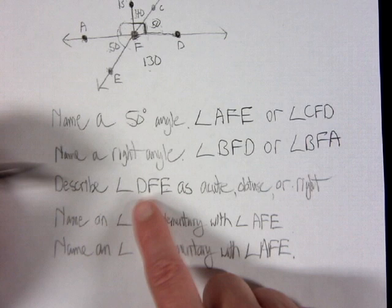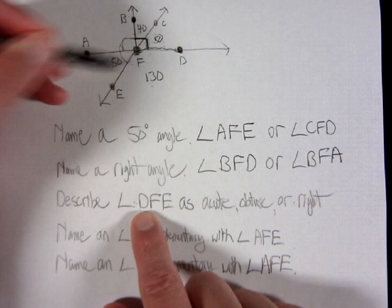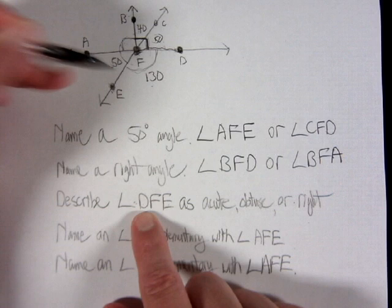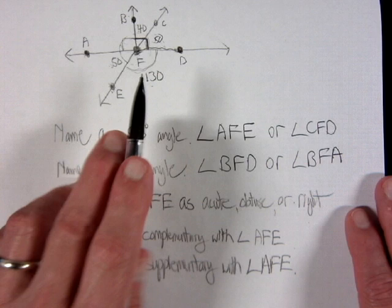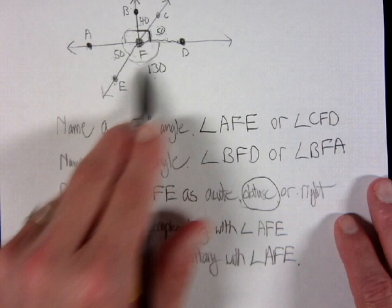The next question asks us to describe angle DFE as acute, obtuse, or right. Tracing D-F-E on the diagram, we find it's labeled as 130 degrees. Since 130 degrees is more than 90, this is an obtuse angle.